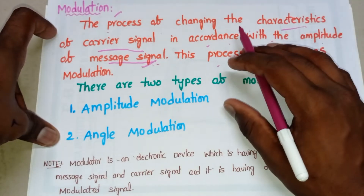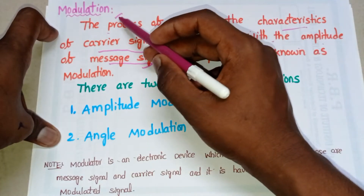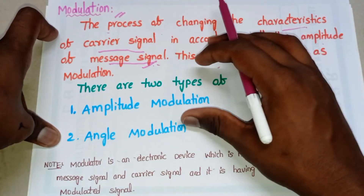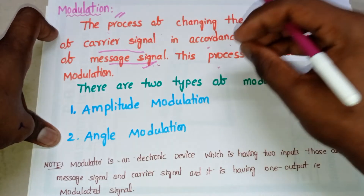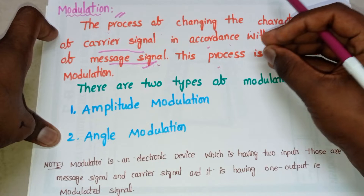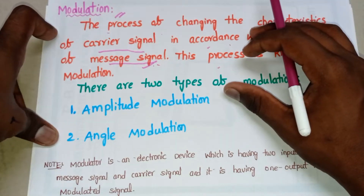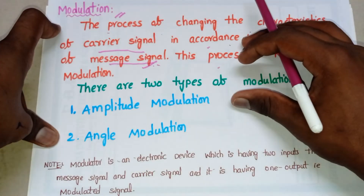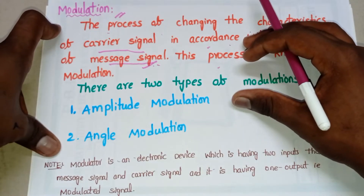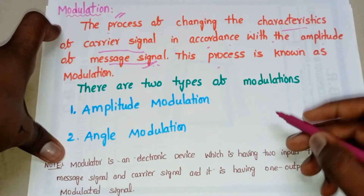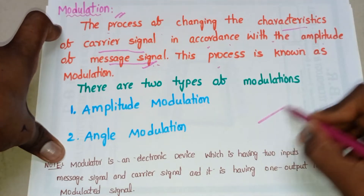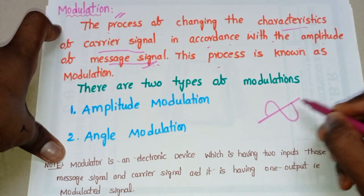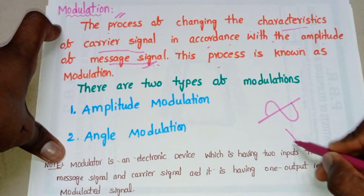This type of technique is known as modulation. Now let's see what is the use of modulation. By using modulation, we can transmit the signal over a longer distance. Suppose here we have our message signal and a high-frequency carrier signal.